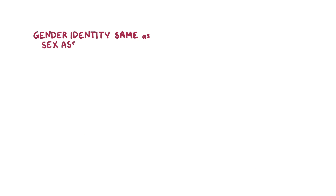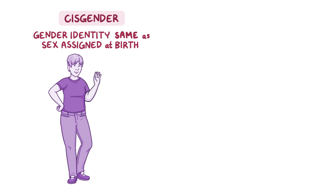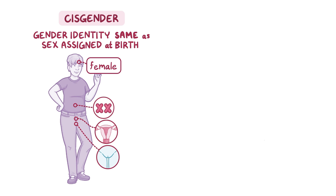When a person's gender identity is the same as their sex assigned at birth, that person is cisgender. For example, a cisgender female is a person who identifies as female and whose sex assigned at birth is female.